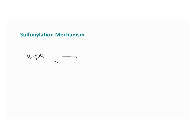Looking at the mechanism for the sulfonylation reaction: the first step is a nucleophilic addition reaction where the oxygen of the alcohol attacks the sulfur. The sulfur is partially positive because the oxygens are withdrawing electron density, so the electrons go up there.